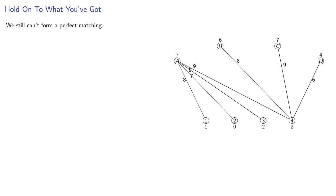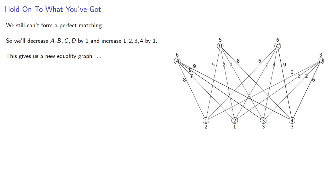We still can't form a perfect matching, so we'll decrease A, B, C, and D by one and increase 1, 2, 3, 4 by one. This gives us a new equality graph, but it's the same graph.